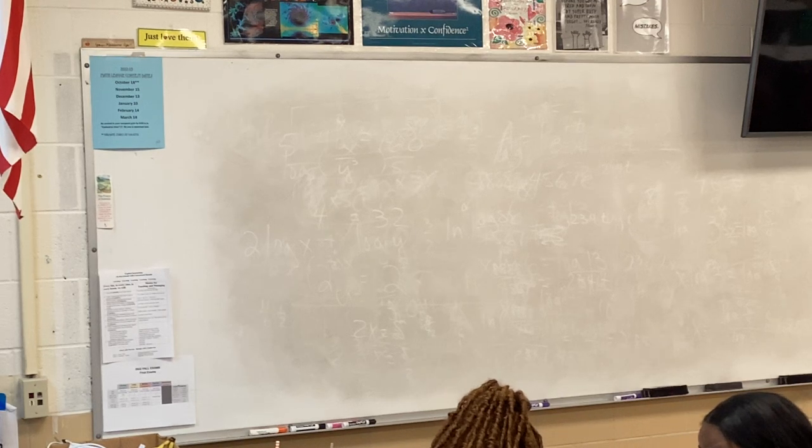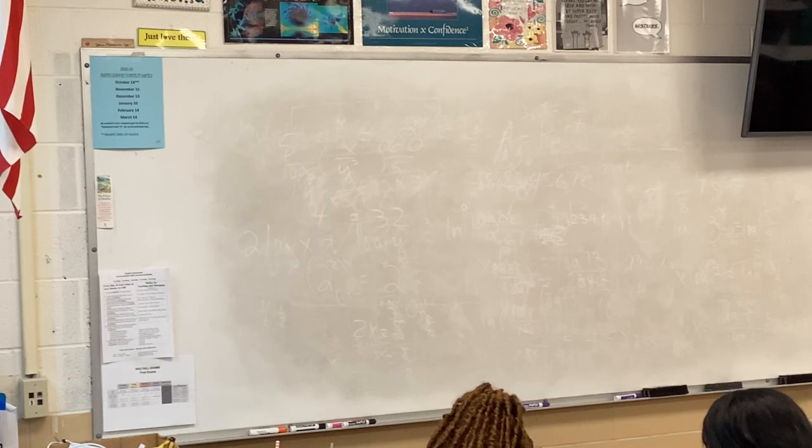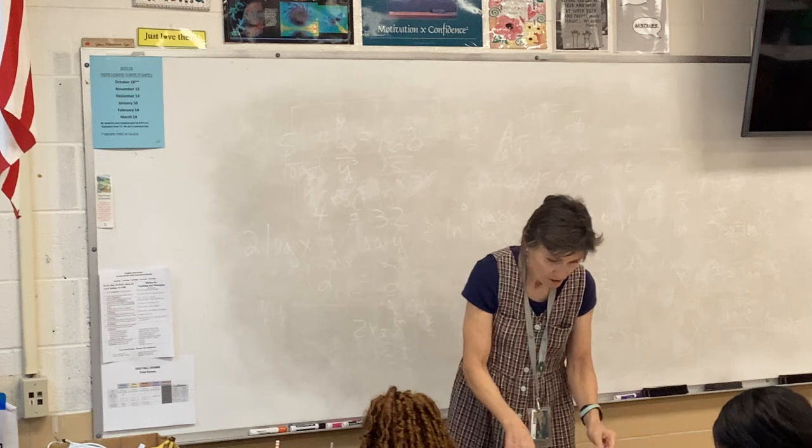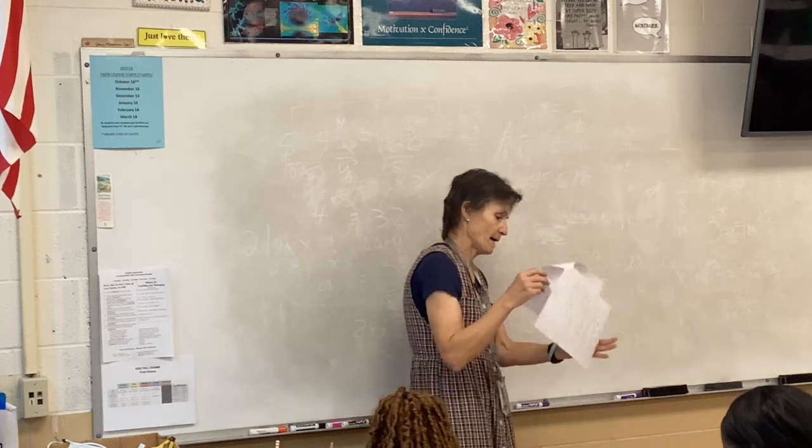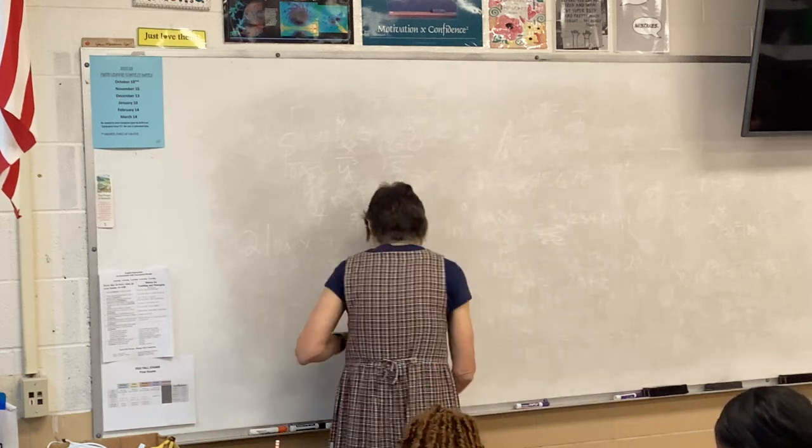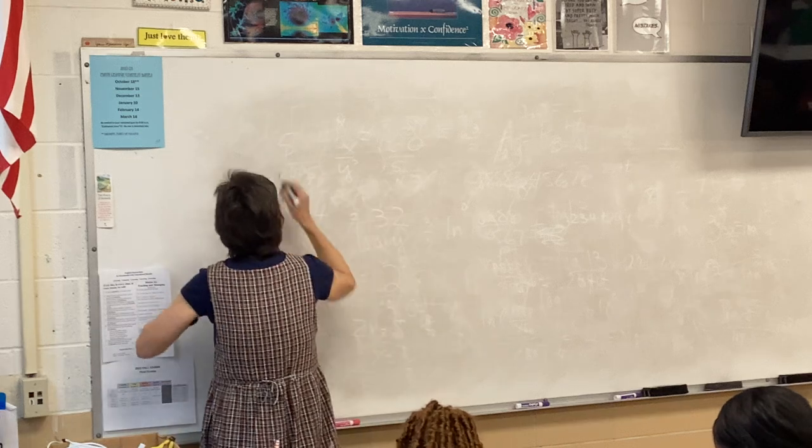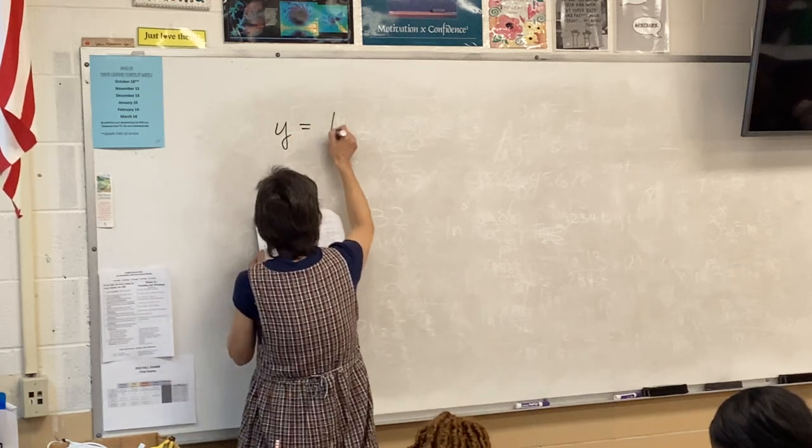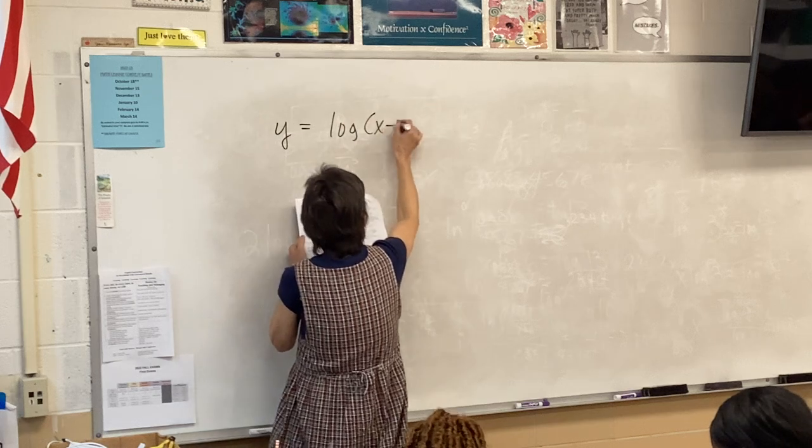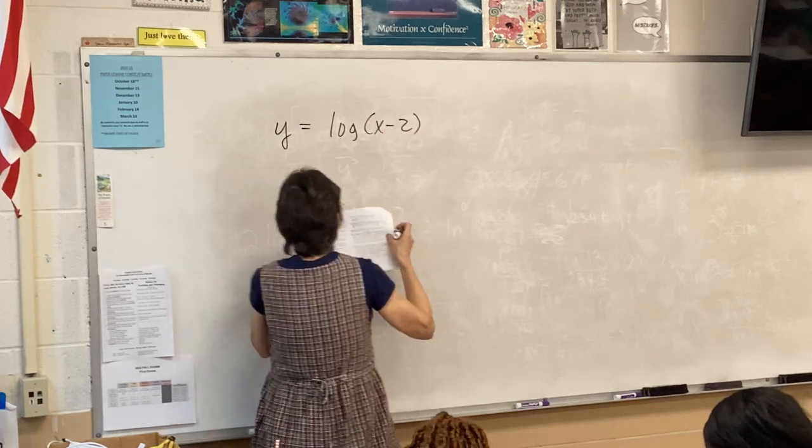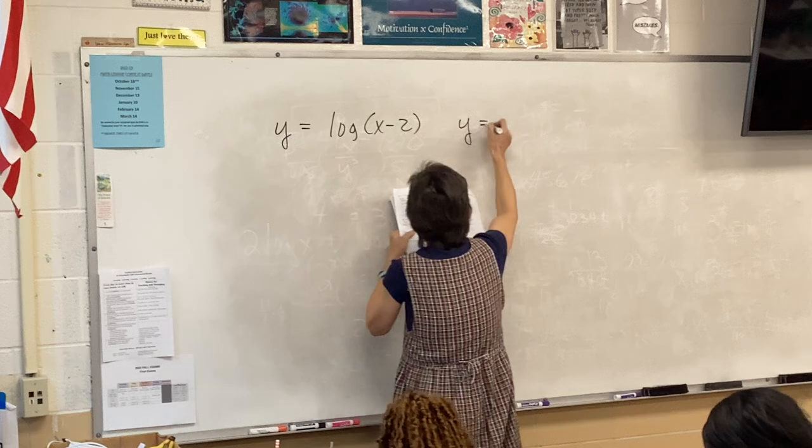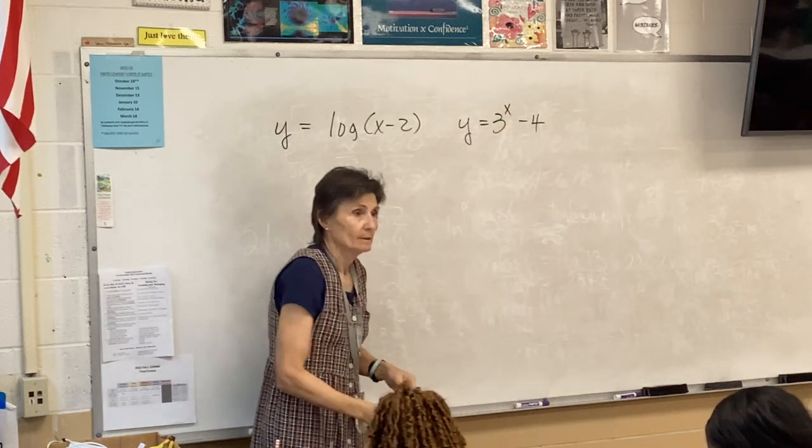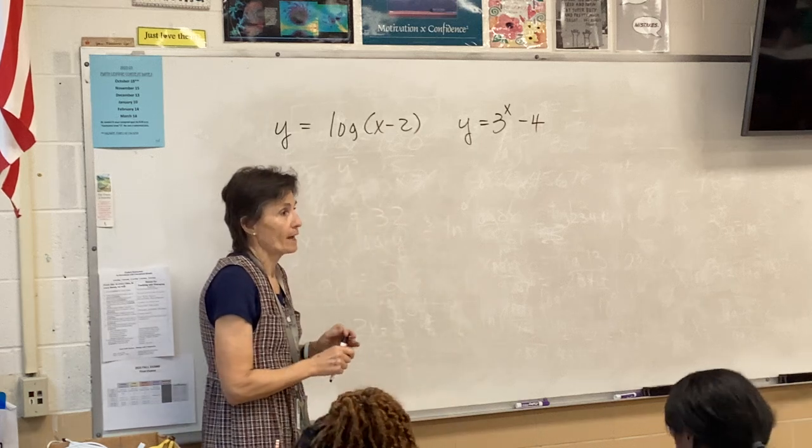Okay, so we are on the sheet called practice test 3, same one we were working on last time, and we are ready for problem number 3, which says state the domain, range, and asymptotes of these two. So basically we need to know what they look like.